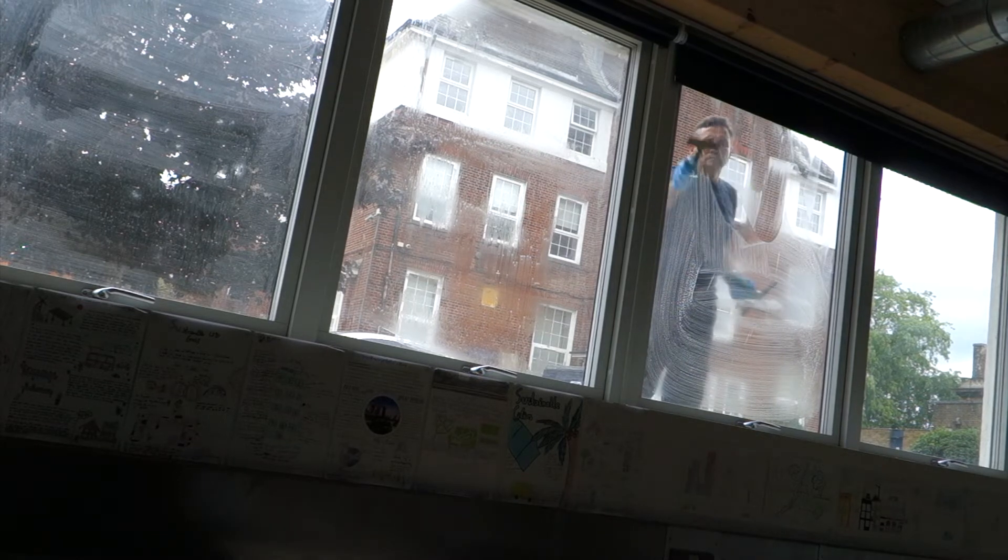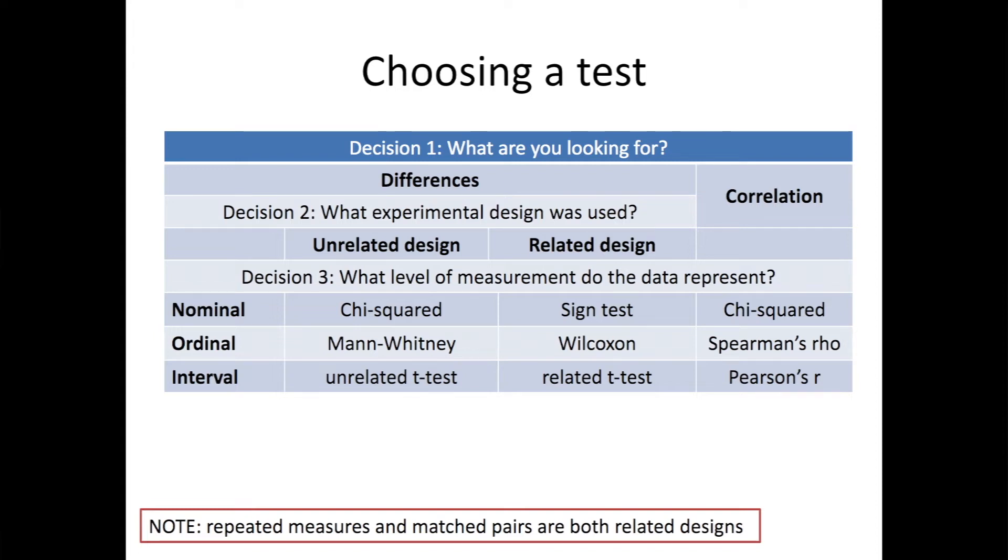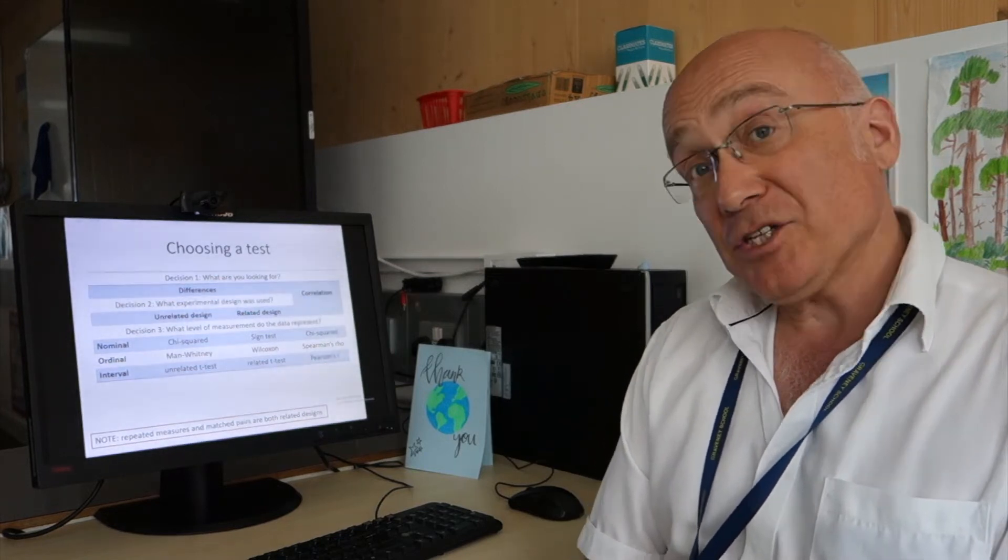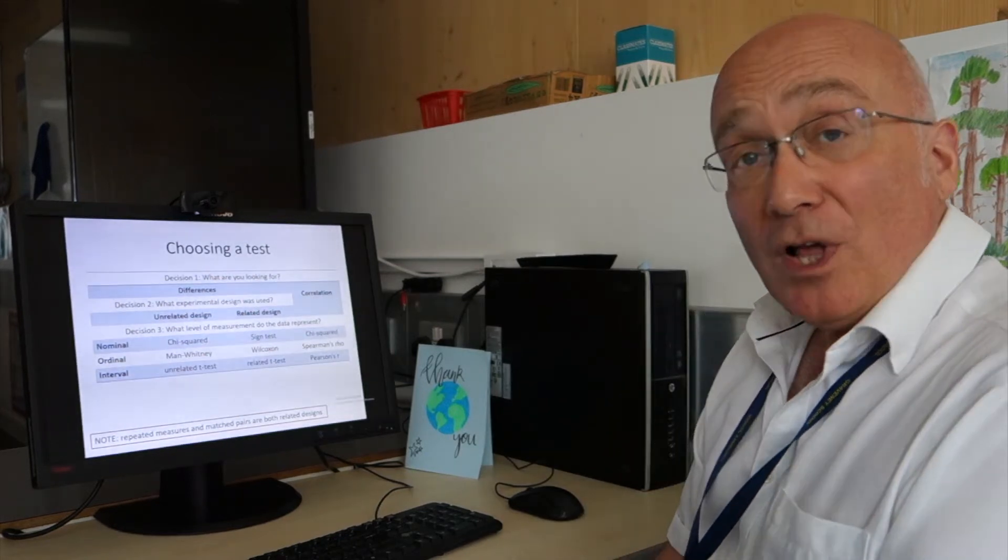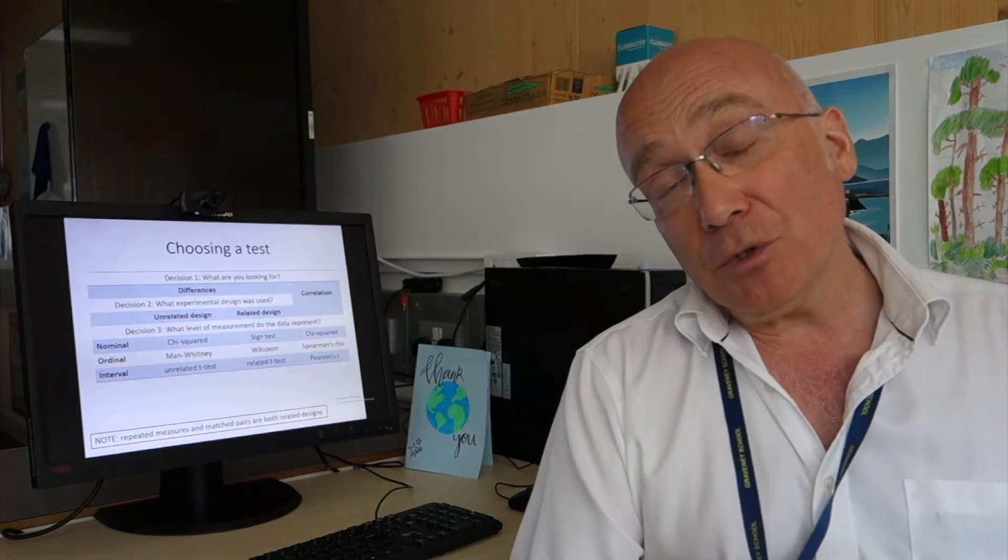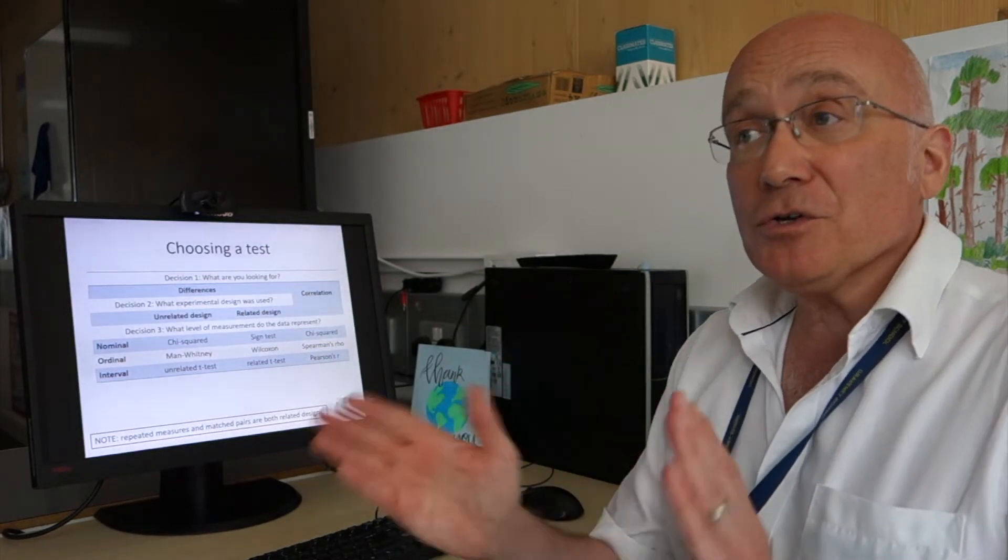So the first choice that we have to make, decision one, what are we looking for? Is it a test of difference or a test of correlation? So in the test in video number 20, for example, are psychology students more or less punctual than sociology students? That would be a test of difference to see if the two things are different.